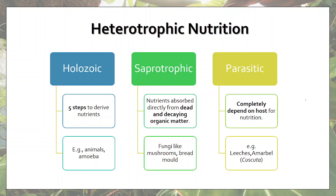In saprotrophic nutrition, the organism absorbs nutrients directly from dead and decaying organic matter. Everything that lives on this earth dies, and once an organism dies its body decomposes. What fungi do is grow on this dead body and secrete digestive juices directly on it. These digestive juices break down complex food particles into simpler ones at the level of nutrients, which are then directly absorbed from this dead and decaying organic matter.